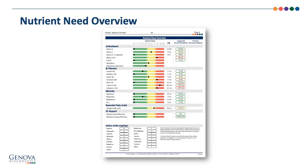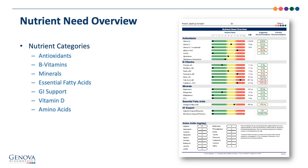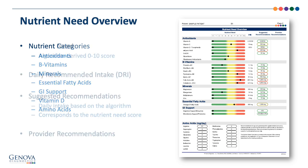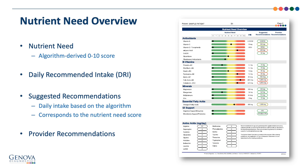The second page is the nutrient need overview page. It evaluates the evidence for a patient's need for nutritional support across seven categories: antioxidants, B vitamins, minerals, essential fatty acids, GI support, vitamin D if ordered as an add-on, and amino acids. The nutrient needs are generated by a complex algorithm weighted by severity and strength of association between biomarkers and nutrients according to peer-reviewed literature. Each nutrient is evaluated on a 0 to 10 scale, with 10 indicating highest need for support.